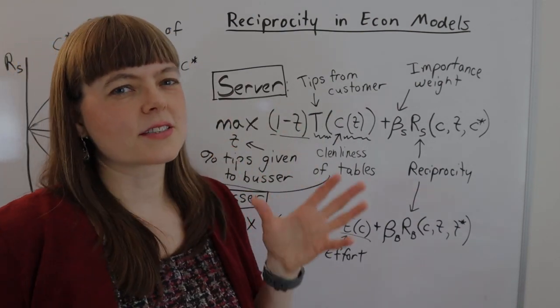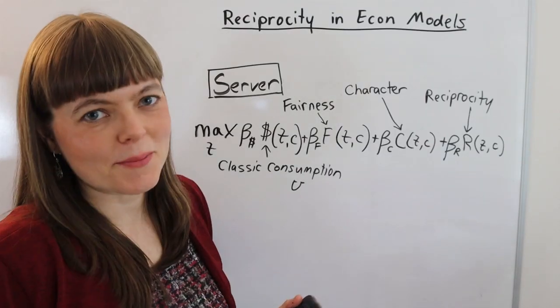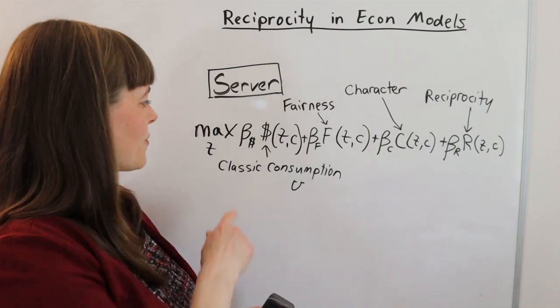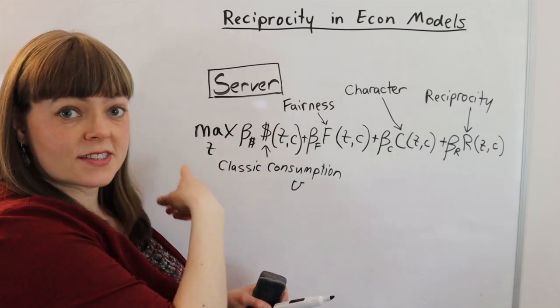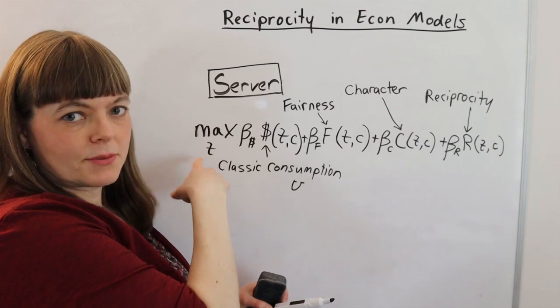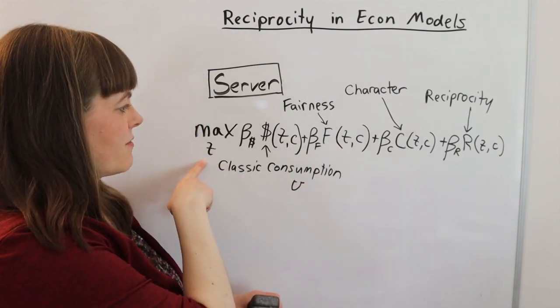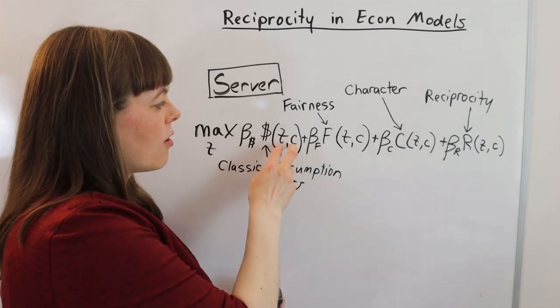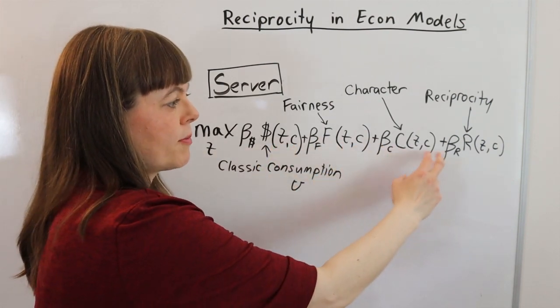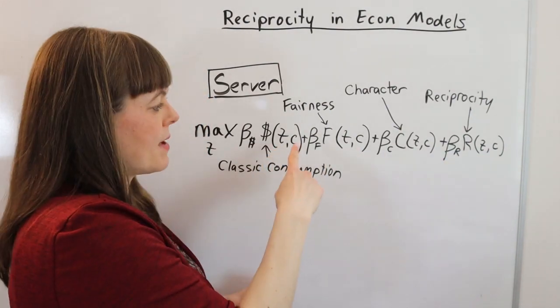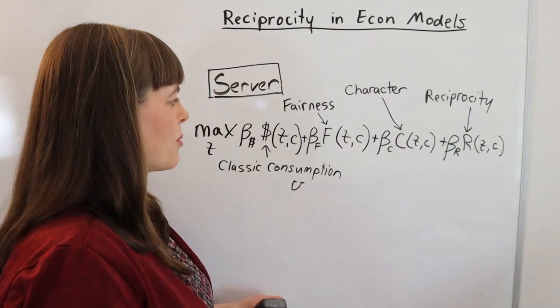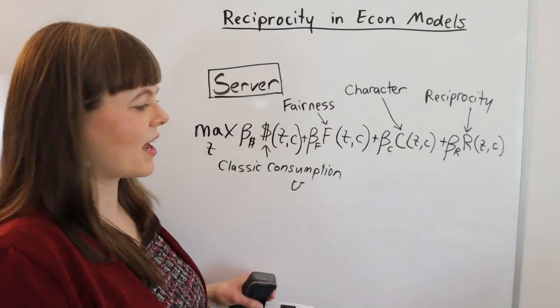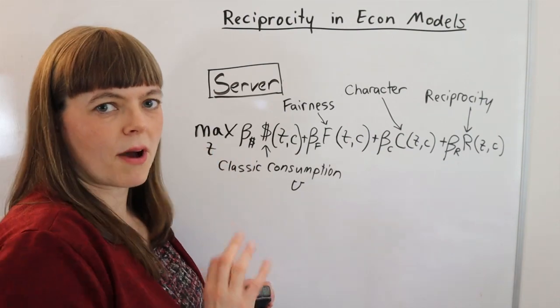This is a variation on Raven's reciprocity model. I will put a link below to his article. But the basic idea here is that the server is still trying to decide how many tips she should give or what percentage of her tips she should give to the busser. And we have four things she cares about. All four of these depend on both people's behavior, both her behavior in tipping him and his behavior in cleaning the tables. And the first one is just the classic consumption utility. That's how much money she gets. That was the original model I had on the whiteboard.